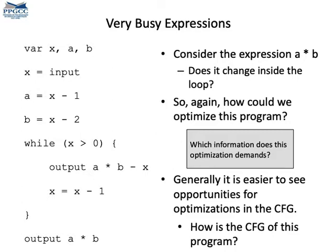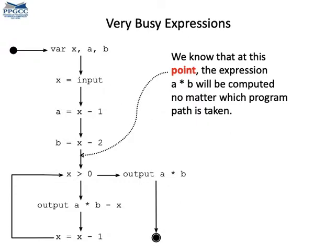We could try to move it outside the loop. For instance, we could place it right in the beginning of the loop. But to do it, which kind of information do we need? When is this kind of code transformation safe? Well, we need to know if the expression A times B will be computed at the beginning of the loop, no matter which path the program takes. Notice that this is the case in this program.